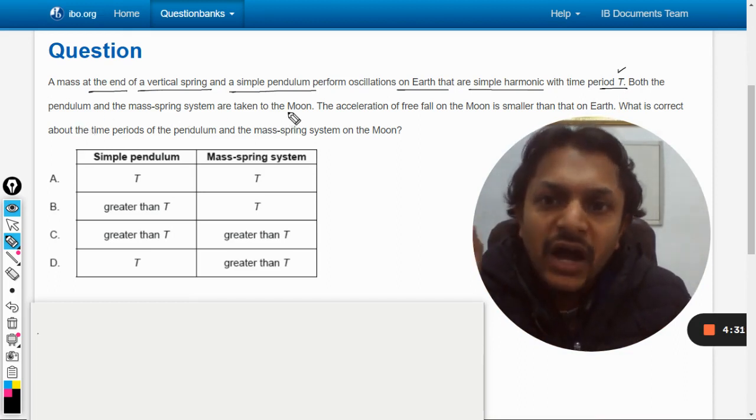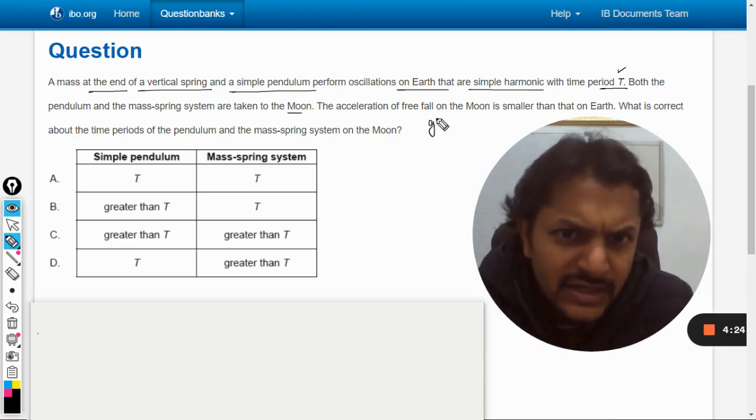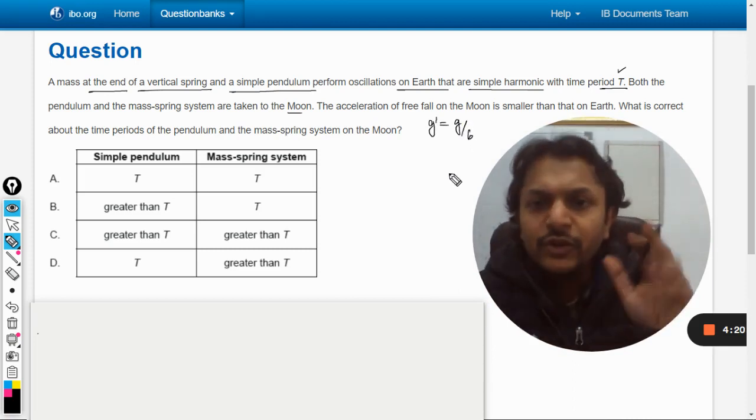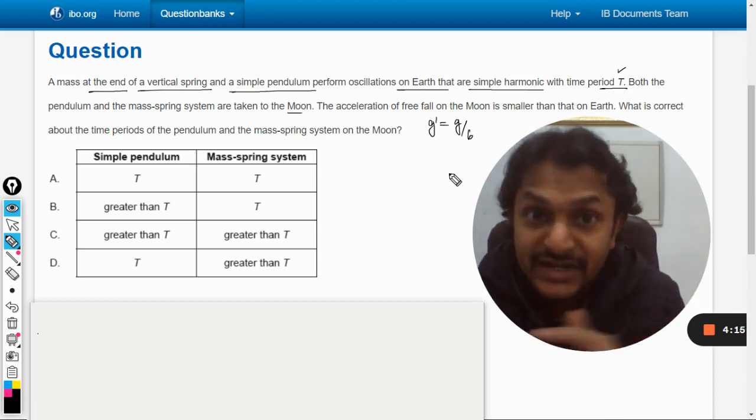Both the pendulum and the mass-spring system are taken to the moon. Now the acceleration of free fall on the moon is smaller than that of Earth, and what is that? g' equals g by 6. We all know this because we learned this in the circular motion and gravitation chapter, topic number six.